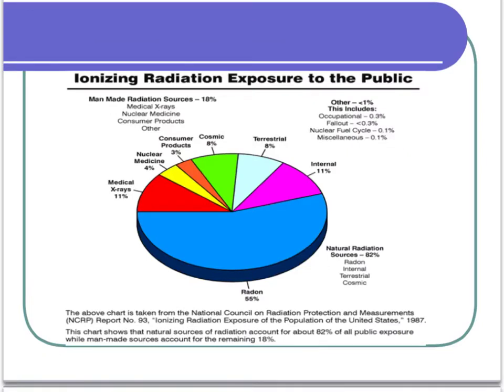This pie graph gives an idea of where radiation exposure comes from for people like us. The biggest portion is radon, which is just in our atmosphere. There's also cosmic radiation coming from the sun or other parts of the universe. Terrestrial means coming from the earth, like what's in the earth's crust. And internal means radiation that's actually in our bodies, which is totally normal.